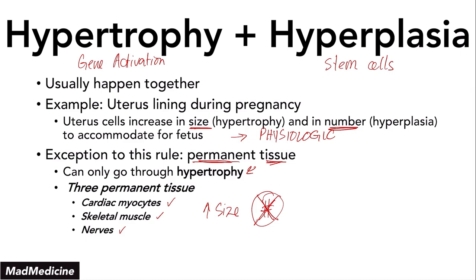When talking about skeletal muscle, think about working out. When you work out, your muscle cells don't duplicate — they just grow in size. That's why bodybuilders have hypertrophied their muscles: they've worked out and undergone hypertrophy. As for nerves, you already know that nerves cannot be replaced, and once they're damaged, they are essentially damaged permanently. Even though there are new updates in science regarding nerve regeneration, the basic concept that nerves do not have stem cells still remains true, so nerves are also classified as permanent tissue.